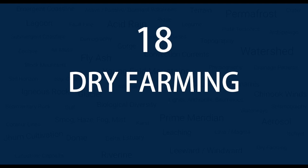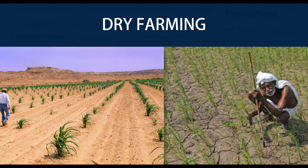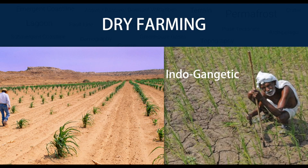Number 18 — Dry Farming. Dry farming or dryland farming is an agricultural technique for non-irrigated cultivation of crops, whereby the maximum amount of water is conserved by soil and water management. Dryland farming is associated with drylands, which are dry areas characterised by a cool wet season followed by a warm dry season. Principal areas of dry farming in India are the Indo-Gangetic Plains of North India, the Deccan Plateau of Peninsular India and the Plateau of Granite Formation.